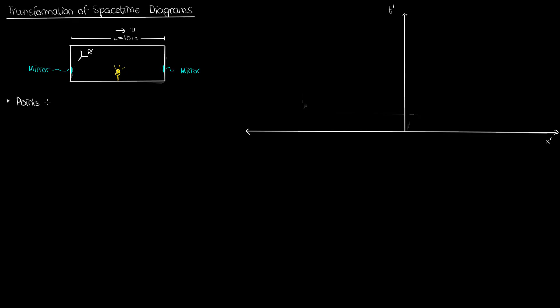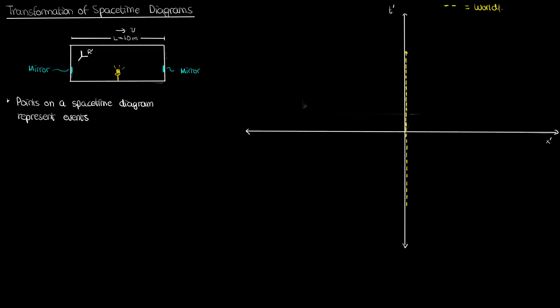Remember that every point on the spacetime diagram represents an event at a particular point in space and time. Now the world line of my bulb, which is the same as the path my bulb takes in the spacetime diagram, is just a vertical line that overlaps with the t' axis. It's vertical because in the primed reference frame, or in the reference frame of an observer in the train, my bulb isn't going anywhere — it's just staying at the center. So time keeps advancing and my bulb keeps moving vertically, but there's no horizontal movement.